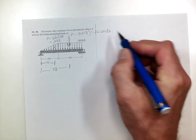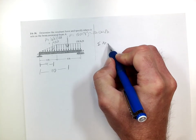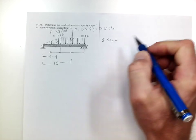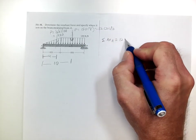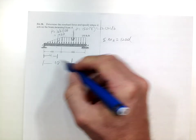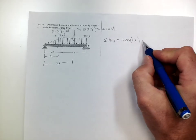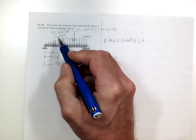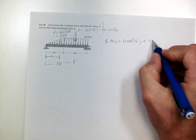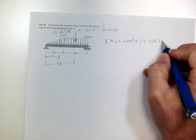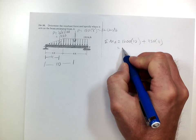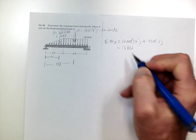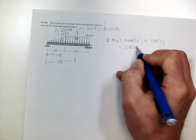So now if we sum the moments about A, we get 1,200 times ten plus 450 times four, and that equals 13,800.